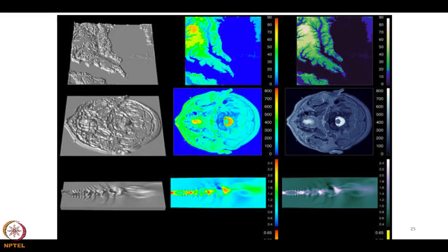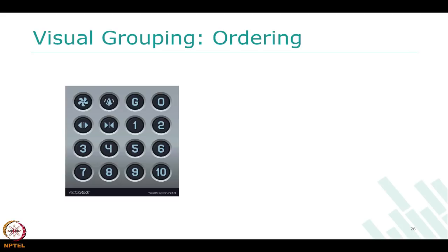Let me walk you through elevator button designs as examples of visual grouping. Here's one design: a 4x4 matrix where G, 0, 1, 2, 3, 4, 5 go left to right, with positions 1x1, 1x2, 2x1, 2x2 used for fan, bell, open door, and close door. The remaining spots hold G, 0, 1, 2 and then 3 through 10.